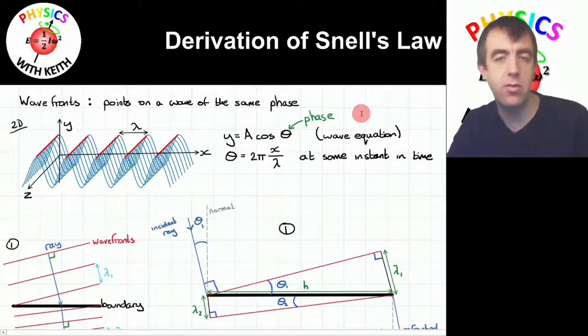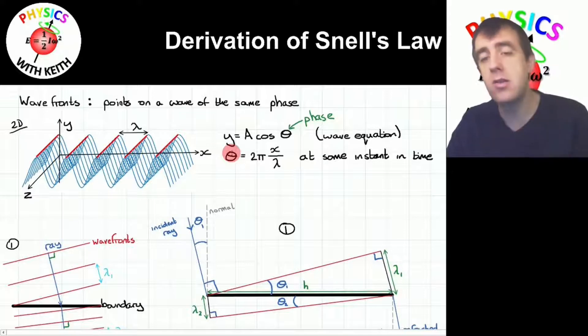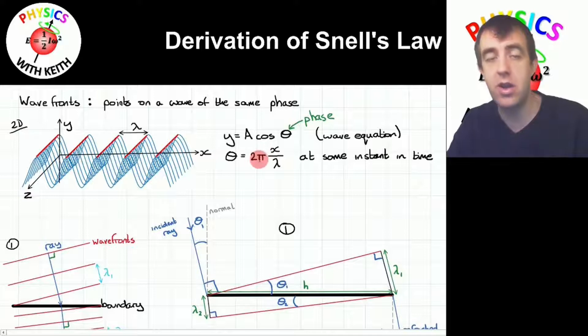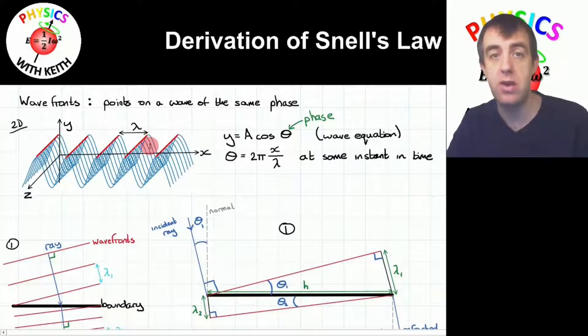The phase at an instant in time equals one full oscillation, one full cycle, two pi radians, multiplied by the fraction of that oscillation. So the phase at position x will equal two pi multiplied by x divided by the wavelength. The wavelength is the distance between two wavefronts in a direction perpendicular to those wavefronts.